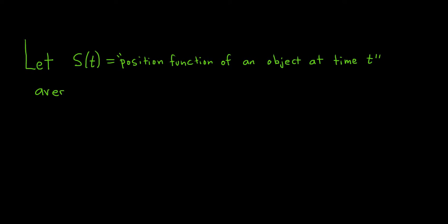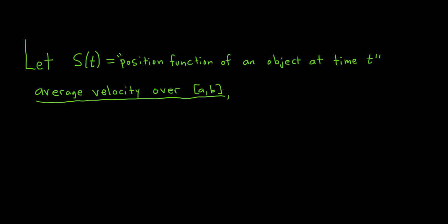The average velocity is defined just like the average rate of change. The average velocity over [a, b] is s(b) minus s(a) over b minus a. Over a different interval, say [t, t + Δt], we get s(t + Δt) minus s(t) in the numerator.